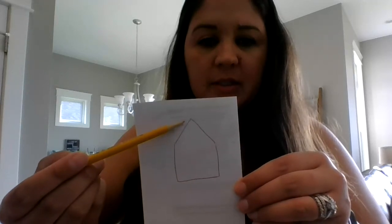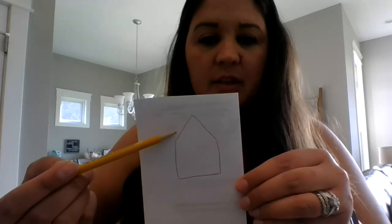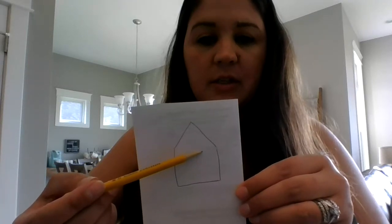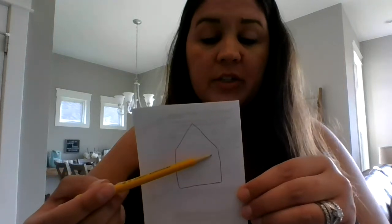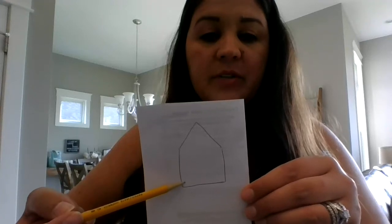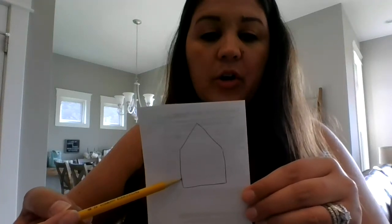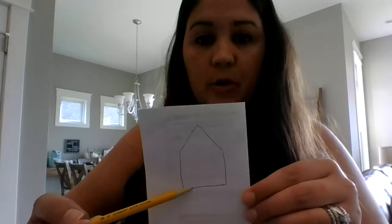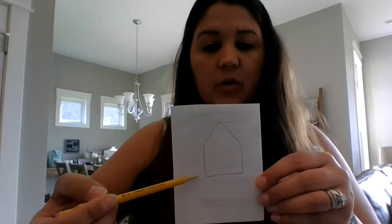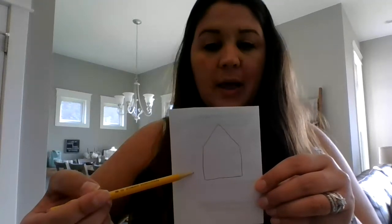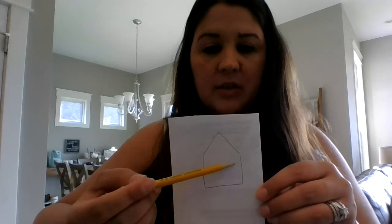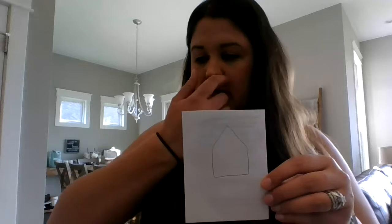This is an acute angle because it's less than 90 degrees. These are obtuse angles because they're larger than 90 degrees, or larger than a square corner. And these are square corners — if you take a piece of paper you could literally put the corner of the paper right here and it would match and line up perfectly. So this could be grouped with shapes that have five sides, shapes that have two square corners, and shapes that only have one set of parallel lines — here's the one and here's its opposite pair.